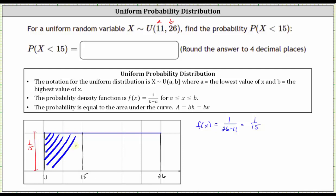We can find this area because we have a rectangle. The blue area is equal to the probability that X is less than 15, which equals the base times the height. The base is 15 - 11, or 4. So we have (15 - 11) times the height 1/15, which equals 4 times 1/15, or 4/15.